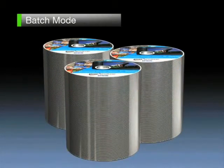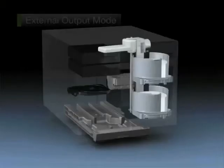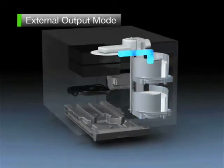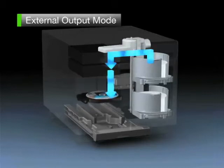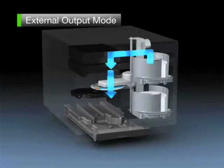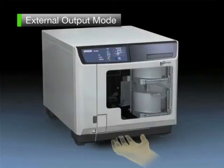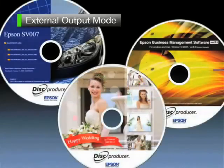For the output of between one and five discs, set external output mode, and then place the discs in stack one or two. The discs will be transported and data writing will be carried out. After label printing is completed, the discs will be output to stack four. It is possible to remove the discs by pulling out stack four without opening the disc cover. The external output mode is most appropriately used for production of small numbers of discs.